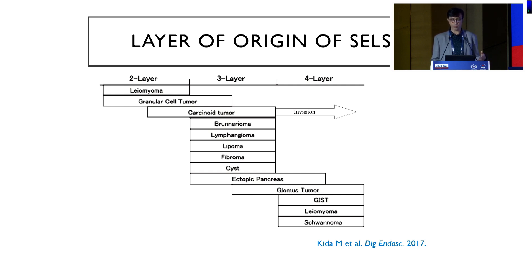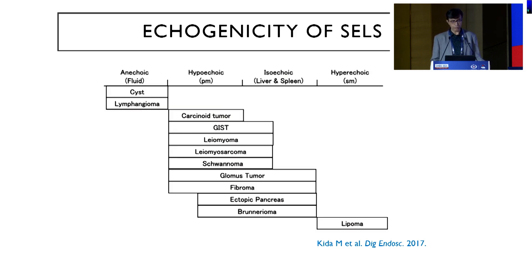The fourth layer most commonly gives GIST and leiomyoma, and the majority arise from the third layer. Echogenicity is equally important. Anechoic lesions are cysts and lymphangiomas. Hyperechoic means lipoma only. Others are hypoechoic or isoechoic — so all GISTs, carcinoids, leiomyomas, schwannomas, and glomus tumors are hypoechoic.